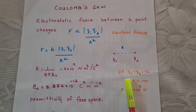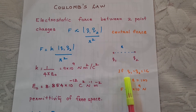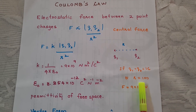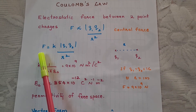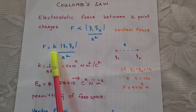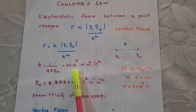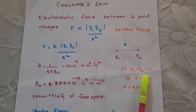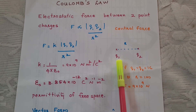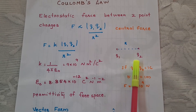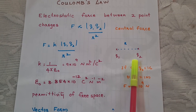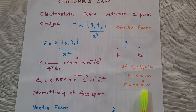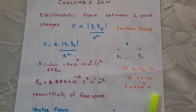So let us define 1 coulomb. If Q1 is equal to Q2 is equal to 1 coulomb, and R is equal to 1 meter, then force F is equal to K, which is equal to 9 into 10 raised to 9 newton. So 1 coulomb is the charge which, when placed at a distance of 1 meter from a similar charge, experiences a force of 9 into 10 raised to 9 newton in vacuum or free space.